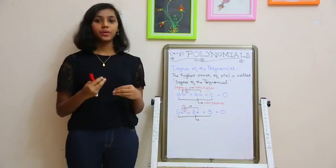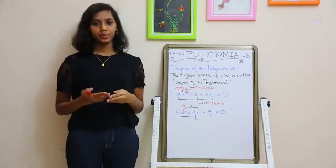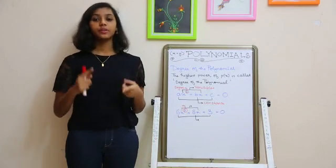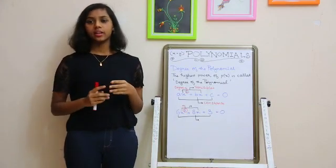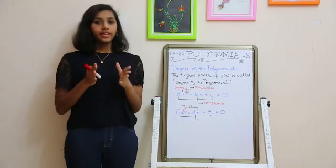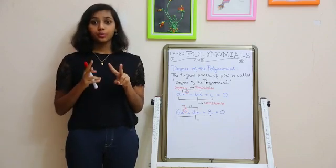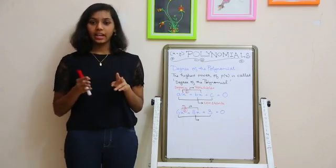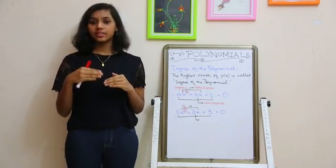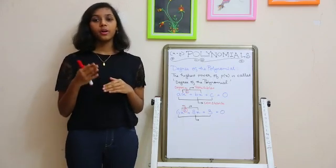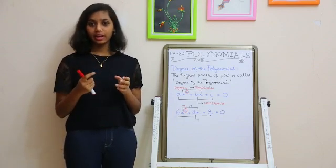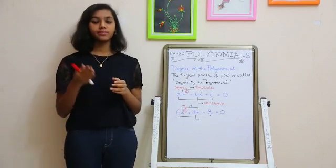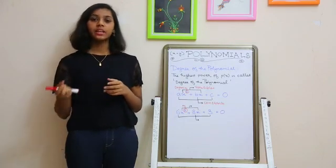Now we know a polynomial consists of a variable and a constant. But there are two more things, and I already told you the standard form of polynomials: ax² + bx + c.